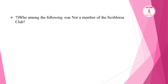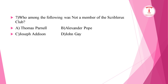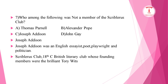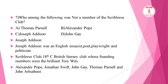Who among the following was NOT a member of the Scriblerus Club? Options: Thomas Parnell, Alexander Pope, Joseph Addison, John Gay. The correct answer is Joseph Addison. The Scriblerus Club is an 18th-century literary club whose founding members include Pope, Swift, Gay, Parnell, and Arbuthnot. Joseph Addison was a famous English essayist, poet, playwright and politician — but not a member.